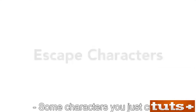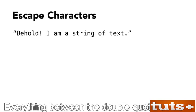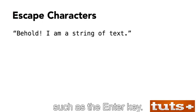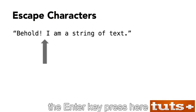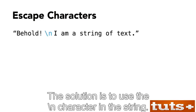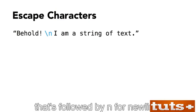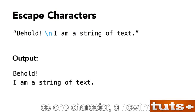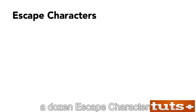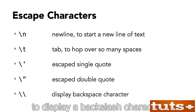Some characters you just can't put into a string. To sneak around this limitation, you use escape characters. In C, a string is a bunch of characters held between two double quotes. Everything between the double quotes counts. But sometimes you can't type a character, such as the Enter key. The solution is to use the newline character in the string — it's an escape character, which starts with a backslash. That's followed by N for newline. Together, the backslash N is interpreted as one character — a newline — generated when the string is output. The C language uses about a dozen escape characters: newline, tab, single quote, double quote, and backslash.